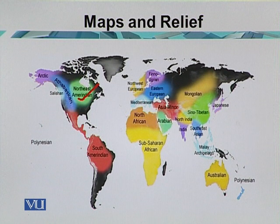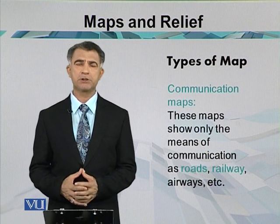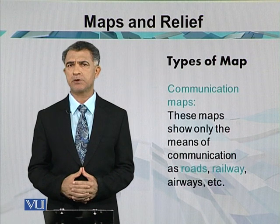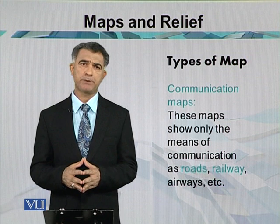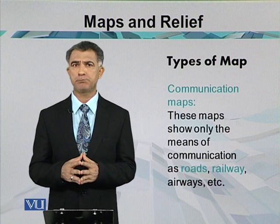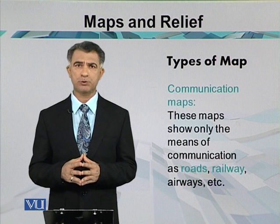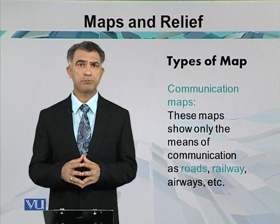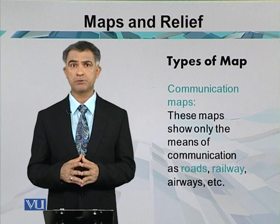These maps are important to show the social groups of the world. The next category is the communication maps, which are important to show the communication networks of a country, region, or the world. For example, in Pakistan we have major roads or highways important for communication and transportation. These maps can show major roads over the country and are important for travelers and tourists.